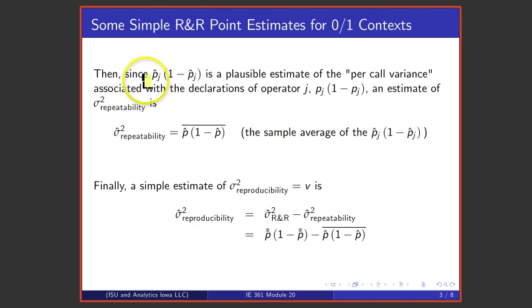Further, since simply taking operator j's fraction of non-conforming calls p hat j and multiplying by 1 minus p hat j, that's a way to estimate operator j's per call variability of 0, 1 or conforming non-conforming calls. That is, that's an estimate of p j times 1 minus p j and if one then thinks about averaging these across all j operators, making a sample average of those across all j operators.